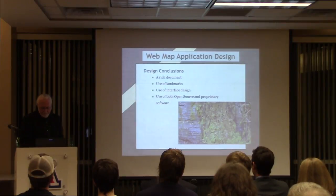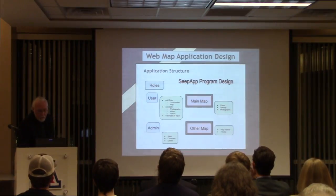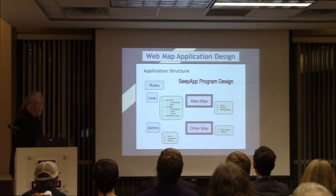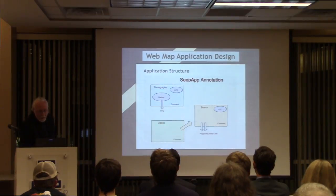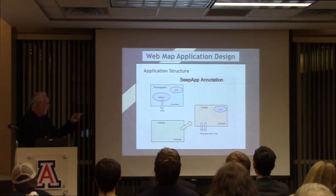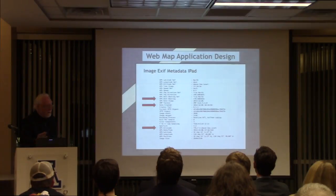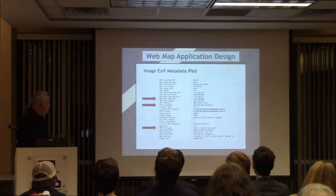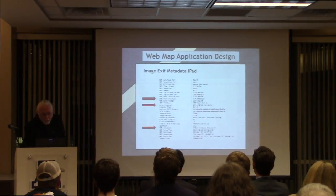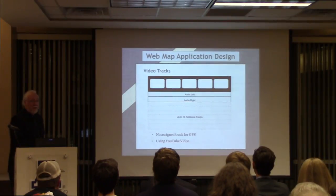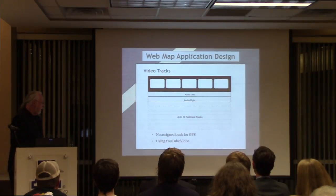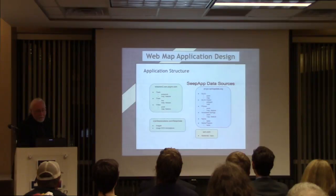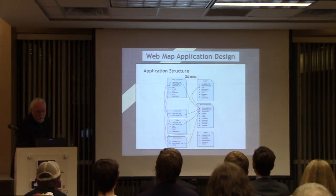Here's the program structure. The main map is an Esri map; the other map is an OpenLayers map. I have two roles, though I'm not using much with admin at the moment. This is sort of the annotation layer. I would like to link videos to tracks. Here is the metadata for an iPad — image metadata — and you can see GPS bearing, date created, altitude, and of course the lat-long, which are things I'm interested in. For video tracks, there are 14 additional tracks but nothing assigned for GPS. I'm using YouTube video, which has been uploaded, though YouTube may erase those tracks. There were four different data sources and here is the schema.